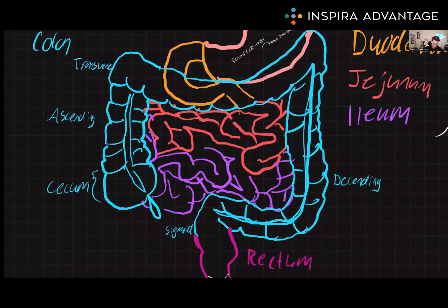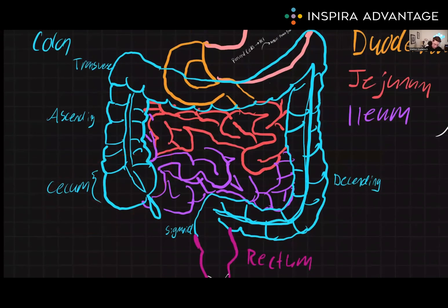The cecum is the first part of the large intestines. It's attached to the appendix, which you can see dangling off here. It is a pouch-like structure that receives material from the small intestine via the ileocecal valve. The appendix is a small finger-like protrusion located in the cecum.